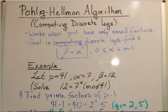In this video, I'm going to go over the Pohlig-Hellman algorithm. It is a method for computing discrete logs. This method works when p minus one, the modulus minus one, has only small factors. The smaller the factors, the less time it takes. If you have really big factors, it takes a long time and you're defeating the purpose of using the algorithm in the first place.